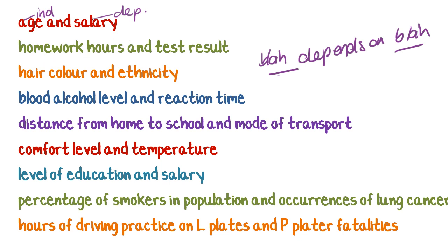'Homework hours depends on your test result' — that does not make sense, that how long you studied depends on what you got in a test. But the other way around: 'your test result depends on the homework hours spent' — that does make sense. So test result is the dependent variable and homework hours is the independent variable.